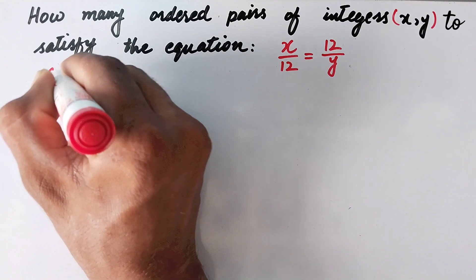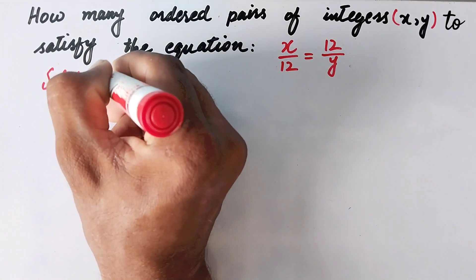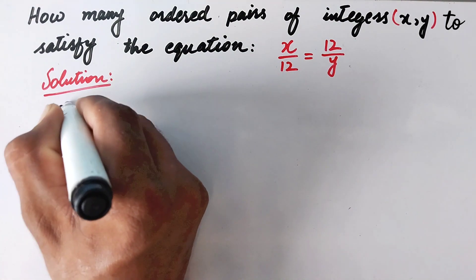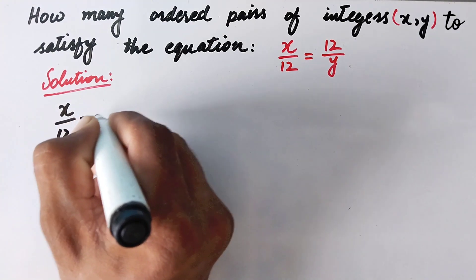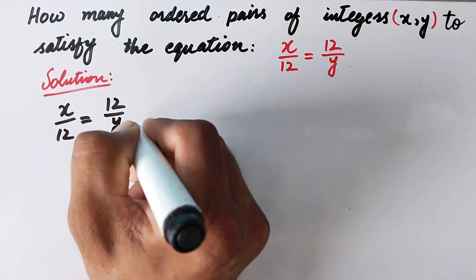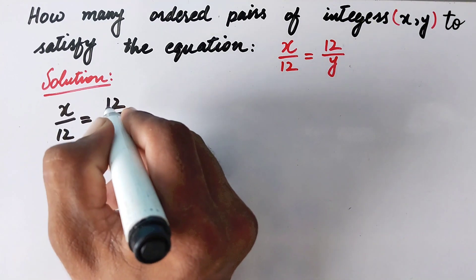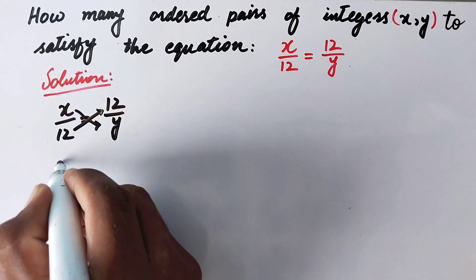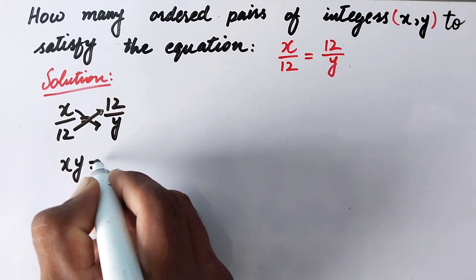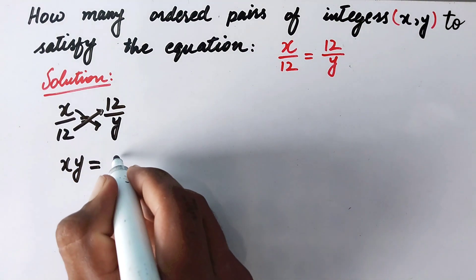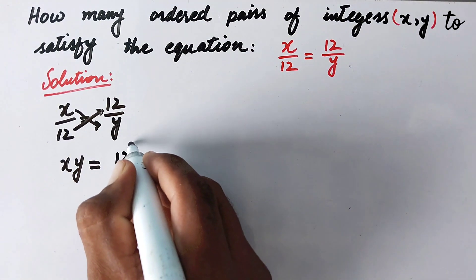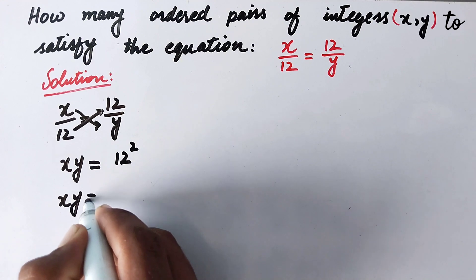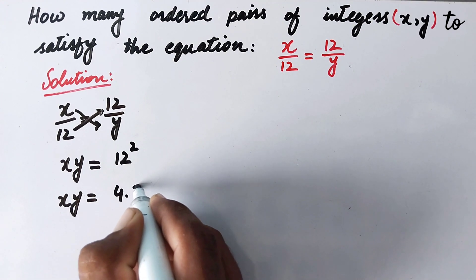So let us see the solution. In the first step, we will write x divided by 12 is equal to 12 divided by y. We will cross-multiply these values and we will get x times y is equal to 12 multiplied by 12, which can be written as 12 raised to the power 2. Or we can write x times y is equal to 4 times 3.